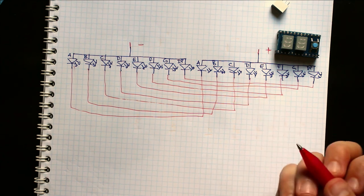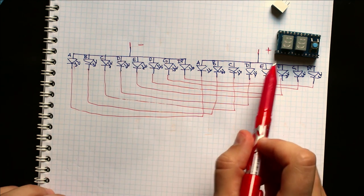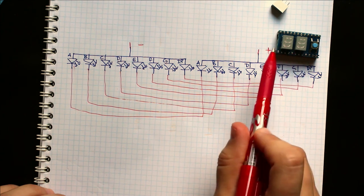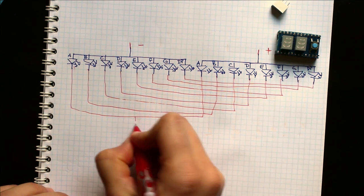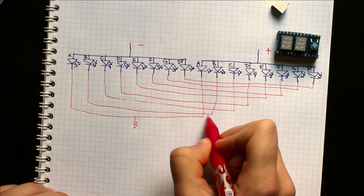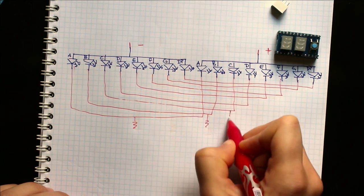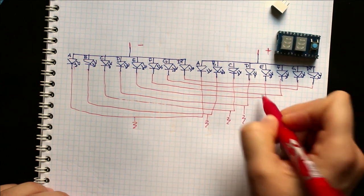And then the last thing, because you're only illuminating one of these numbers at a time, they can actually share their resistors without a problem.